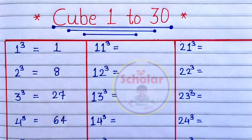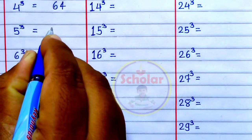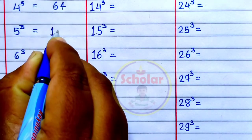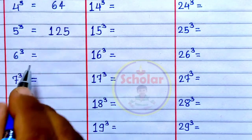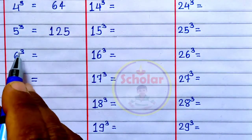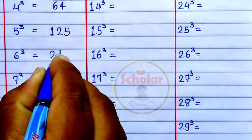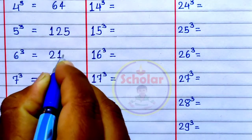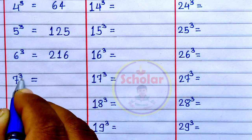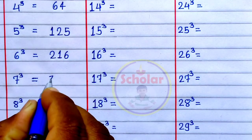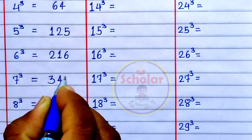Cube of 5 is 125. Cube of 6 is 216. Cube of 7 is 343.